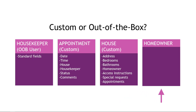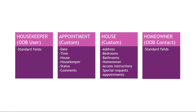And finally, homeowner. Here we need things like name, address, phone number, and email address. Luckily for us, there's a contact entity that has all of those fields, so we can reuse that. This is what we have so far for our data model.